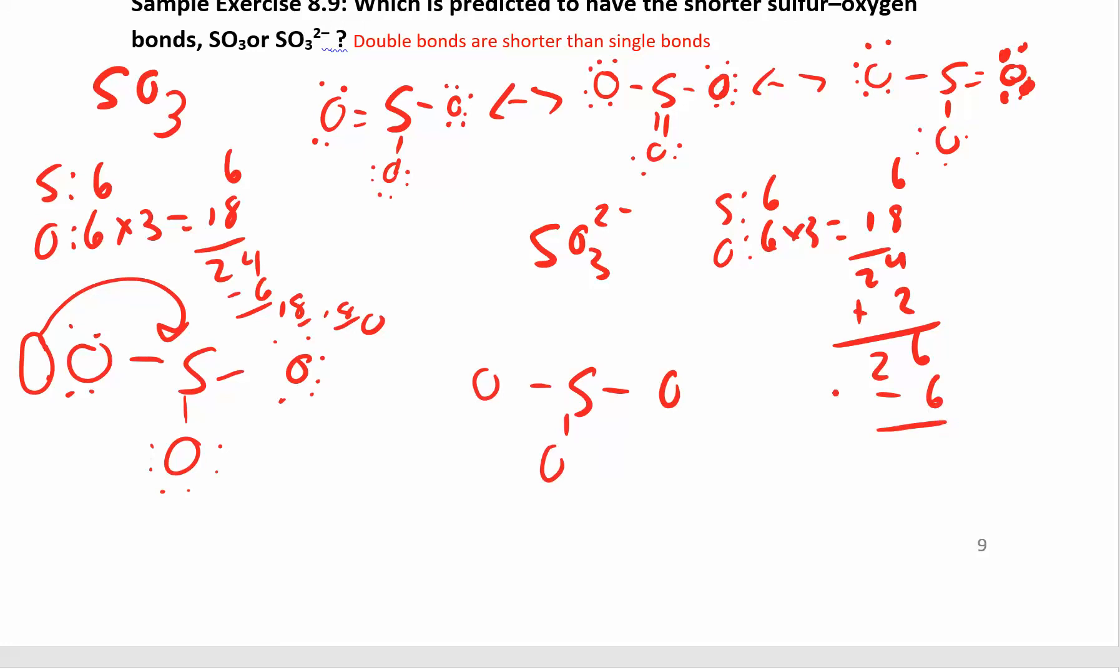I just used up 6 electrons, 2, 4, 6. I have 20 left over. 2, 4, 6, 8, 10, 12, 14, 16, 18, and 20. And so this one is all single bonds.